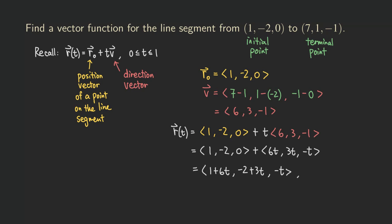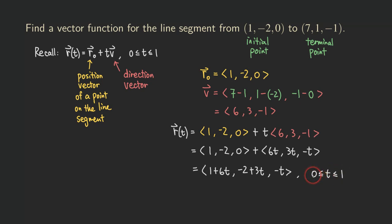We can do a quick check. If we plug in T equals 0, we get 1, negative 2, and 0, which is exactly the initial point. When we plug in T equals 1, we get 1 plus 6 equals 7, negative 2 plus 3 equals 1, and negative 1 — which is exactly the terminal point. So plugging in 0 gives the initial point, increasing T traces all points in between, and plugging in 1 gives the terminal point.